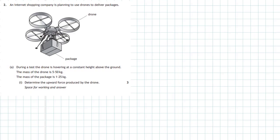Question 2 from Section 2 of the Higher Physics exam of 2018. An internet shopping company is planning to use drones to deliver packages. During a test, the drone is hovering at a constant height above the ground. The mass of the drone is 5.50 kilograms and the mass of the package is 1.25 kilograms. We need to determine the upward force produced by the drone, so it's a force question and we need to draw a free body diagram.